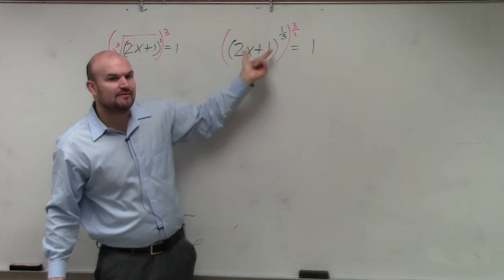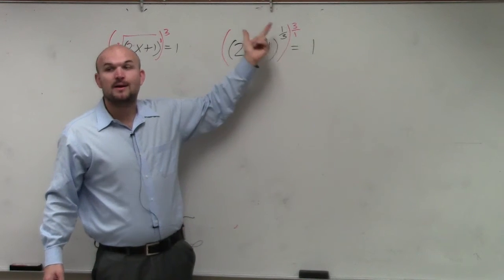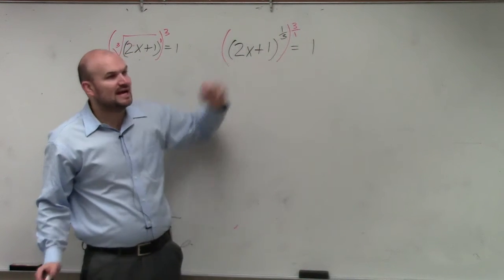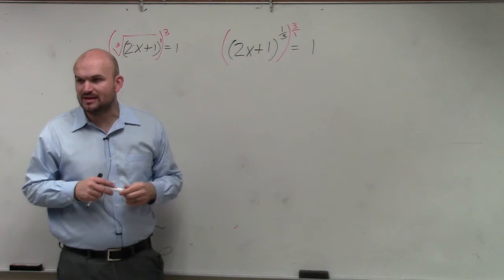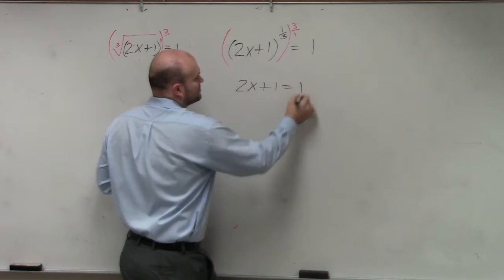What do you do with the powers when you have an exponent raised to another power? You multiply. So what happens when you multiply any number by its reciprocal? It multiplies to 1. So therefore, we're left with 2x plus 1 equals 1.